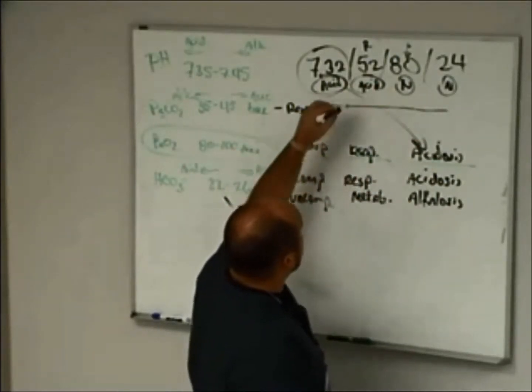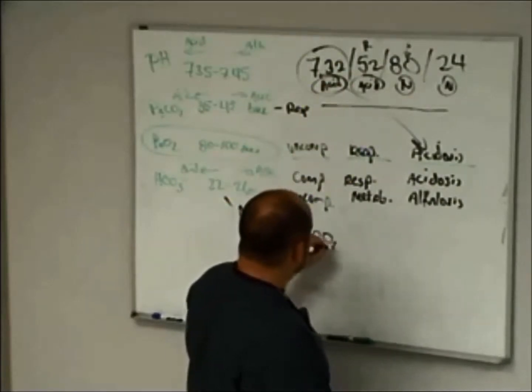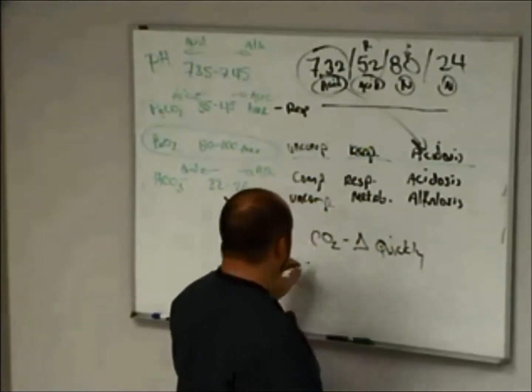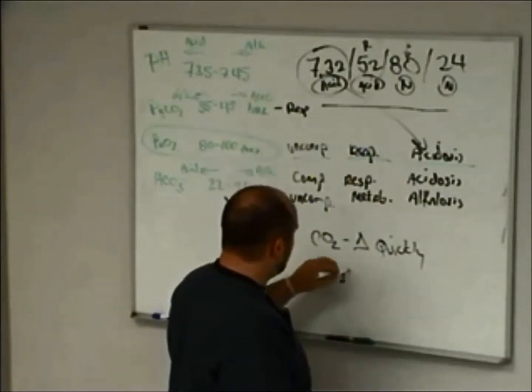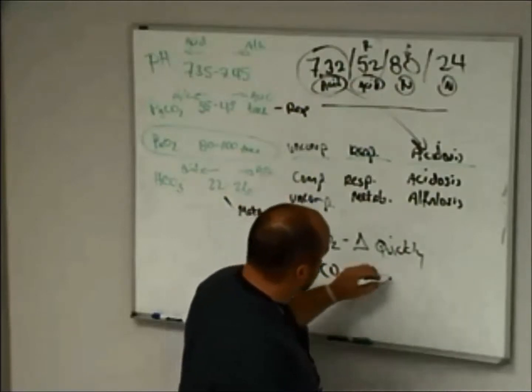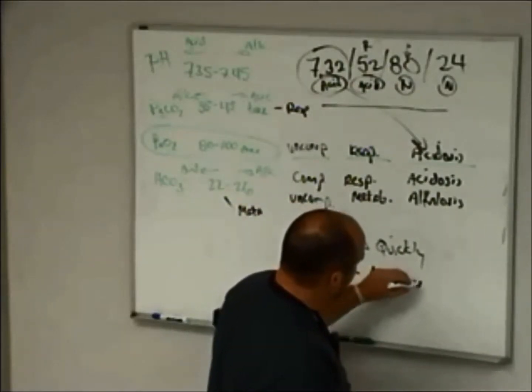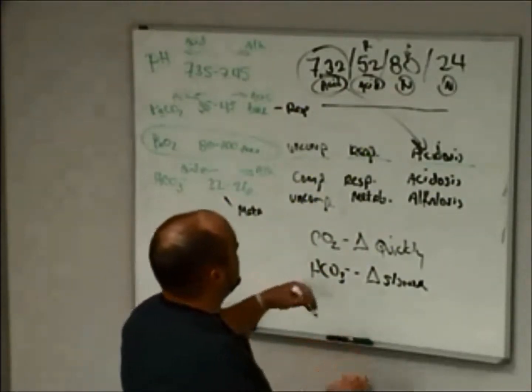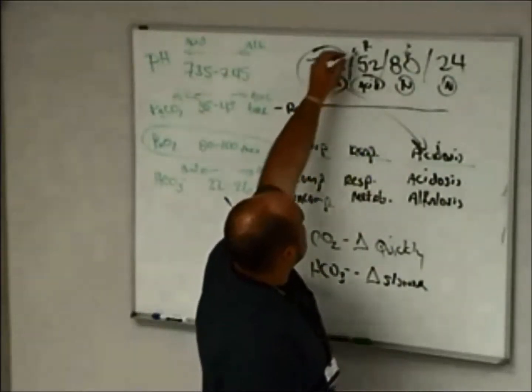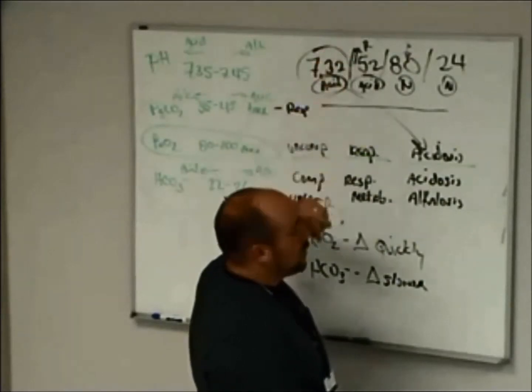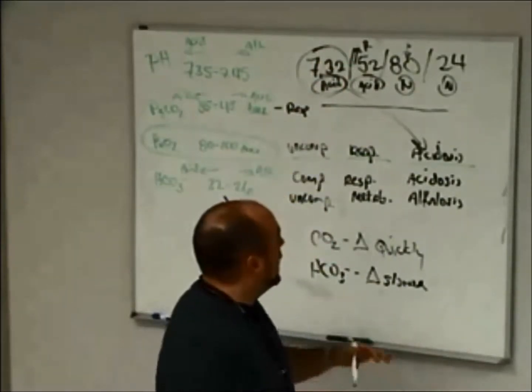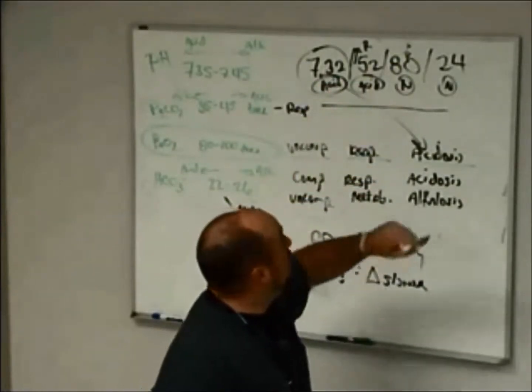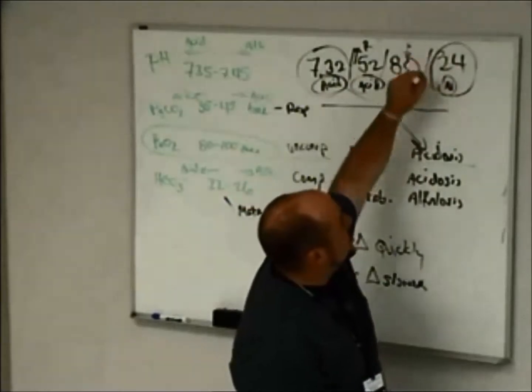So what we're going to do, we know that CO2 changes quickly, very quickly. And bicarb changes slower than that. It's usually over hours. So what's going on in this situation? You think about it, for some reason, they're retaining CO2. So they're not ventilating properly for some reason. And has it been going on a long time? No, because bicarb hasn't changed at all yet.